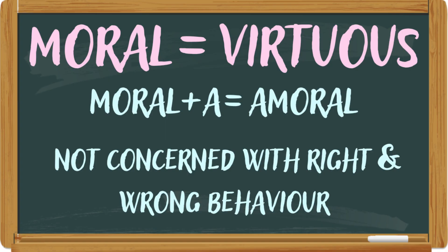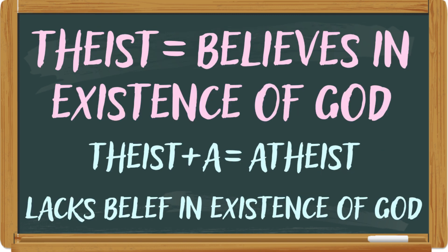The first word is 'moral', which means virtuous. When 'a' is attached to it, it becomes 'amoral', meaning someone who is not concerned with good and bad behavior. The second word is 'theist' — T-H-E-I-S-T — which means a person who believes in the existence of God. When we attach 'a' to it, it becomes 'atheist', meaning someone who lacks belief in the existence of God.